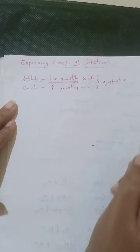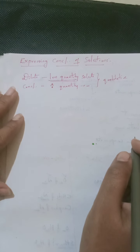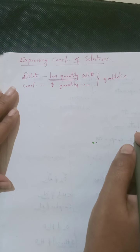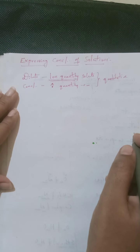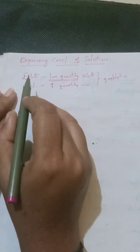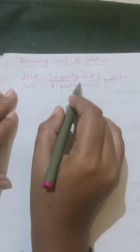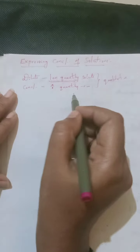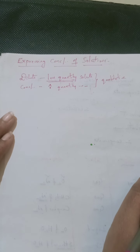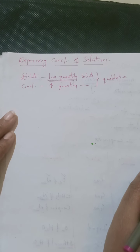So qualitatively, the composition of a solution can be expressed using two terms: dilute and concentrated. In dilute solutions, less quantity of solute is present; in concentrated solutions, more quantity of solute is present.